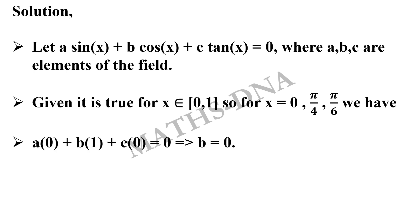This gives us three equations. When x = 0, we put the value in the equation above: we get a(0) + b(1) + c(0) = 0, this gives us that b = 0. And now with x = π/4 and x = π/6...